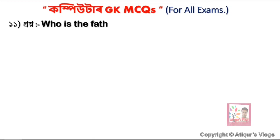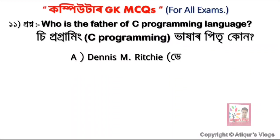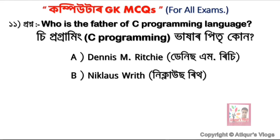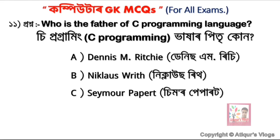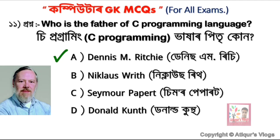Question 11: Who is the father of C programming language? C is a programming language. Option A is Dennis M. Ritchie, option B is Niklaus Wirth, option C is Samuel, and option D is Donald Knuth. The correct answer is option A — Dennis M. Ritchie is the father of C programming language.